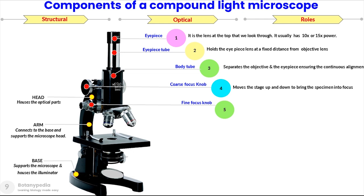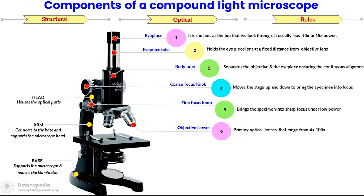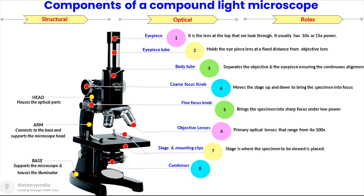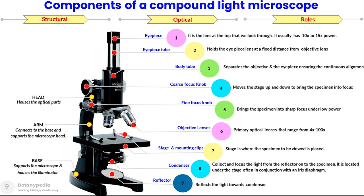Once the specimen is in focus, the fine focus knob brings it into sharp focus under low power. The objective lenses can range from 4x to 100x magnification. Then we have the stage and mounting clip, where the specimen is kept and viewed. The condenser collects and focuses light from the reflector onto the specimen; it is located just below the stage and is used in conjunction with an iris diaphragm, which controls the amount of light passing through.